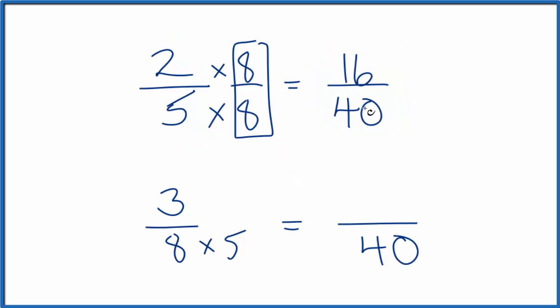Down here, I need to multiply by 5 over 5. 3 times 5 is 15. And now, since the denominator is the same, we can compare the numerator. And you see right away that 16 is larger than 15.